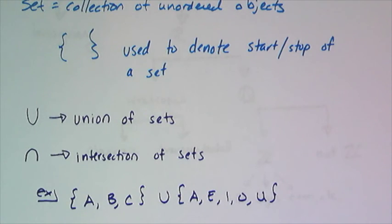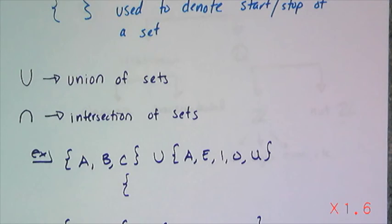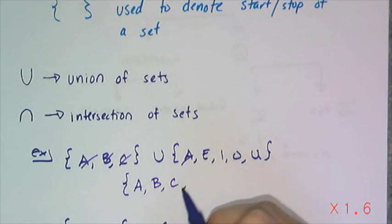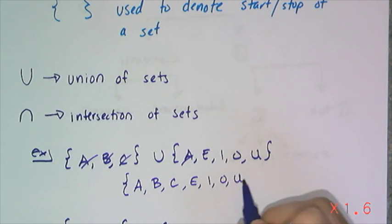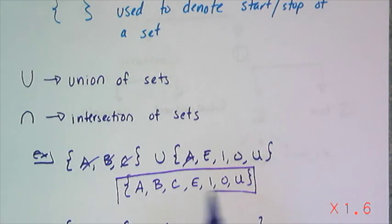Unions are the joining of all of the elements of two or more sets, and the intersection of the sets are the things that they have in common. So first off, I have an example of the set A, B, C union set A, E, I, O, U, and the resultant set of this is the combination of those two sets. So I have an A, a B, and a C, and then an E, an I, an O, and a U. And that set here is the union of those two sets.